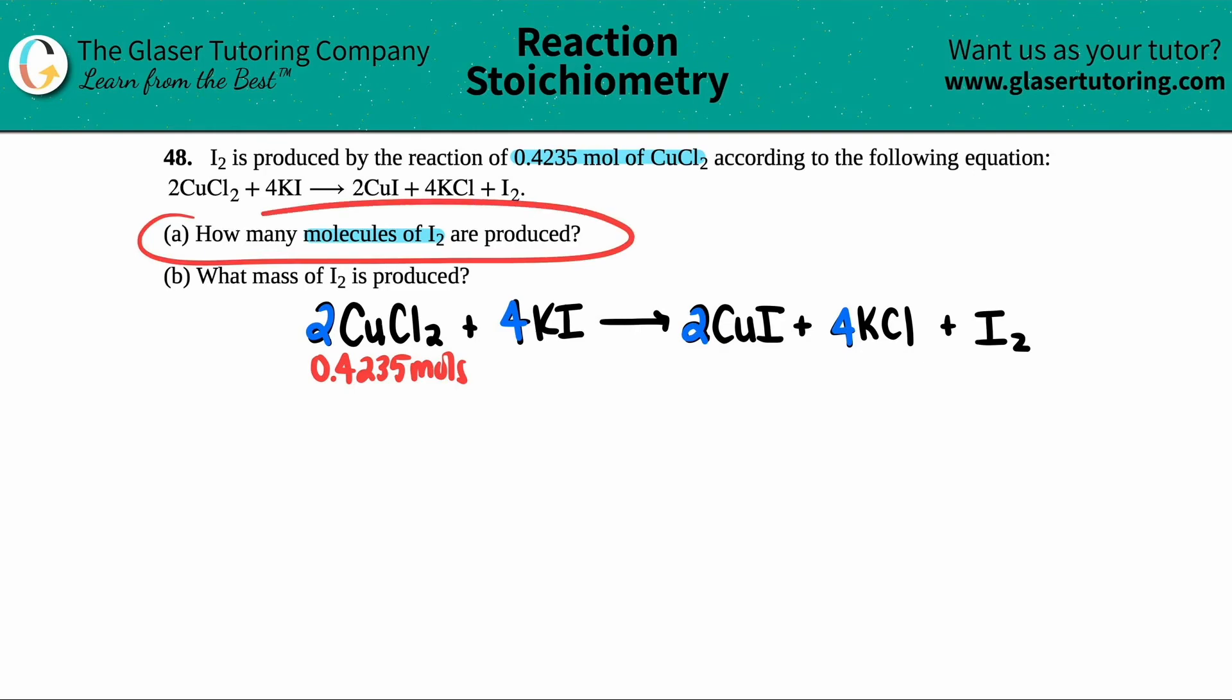Now for letter A, they're just asking for the molecules of I₂. So I'm going to scan my balanced equation, I'm going to find the I₂, and I'm just going to say, okay, they wanted the molecules, you got it. So molecules equals question mark. Okay.